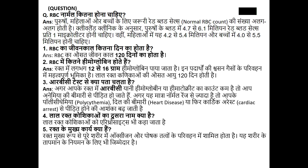RBC में कितना हीमोग्लोबिन होता है? रक्त में लगभग 12 से 16 ग्राम हीमोग्लोबिन पाया जाता है। ये पदार्थ श्वसन गैसों के परिवहन में महत्वपूर्ण भूमिका निभाते हैं। लाल रक्त कणिकाओं की औसत आयु 120 दिन होती है। RBC टेस्ट से क्या पता चलता है? अगर आपके रक्त में RBC यानी हीमोग्लोबिन या हीमाटोक्रिट का काउंट कम है, तो आप एनीमिया की बीमारी से पीड़ित हो जाते हैं।